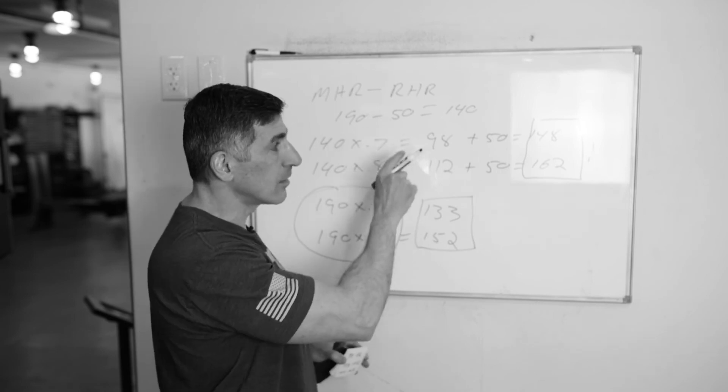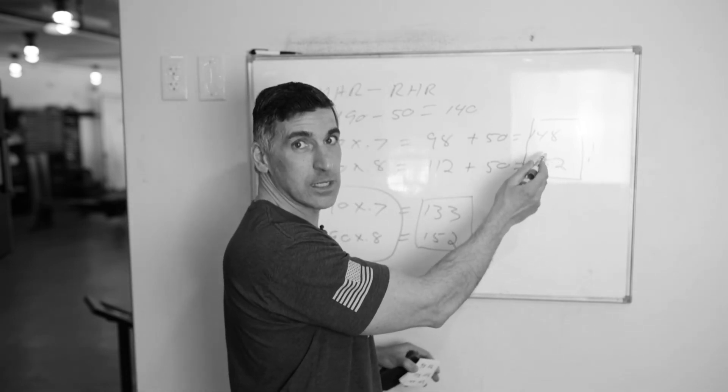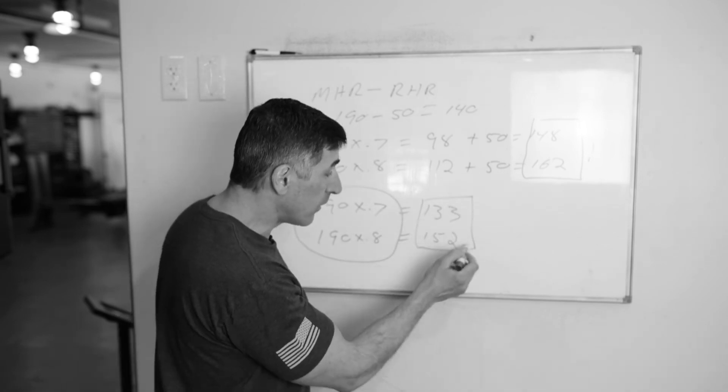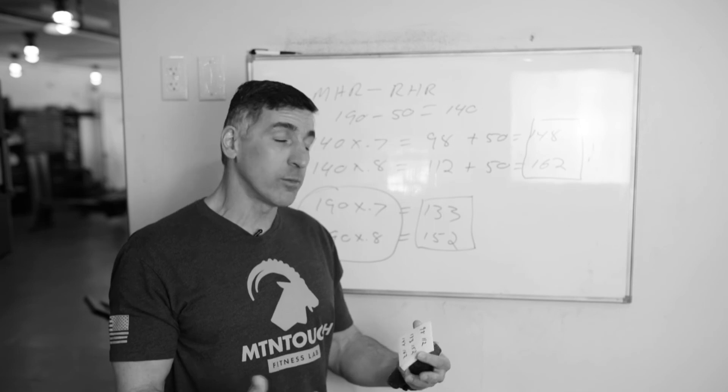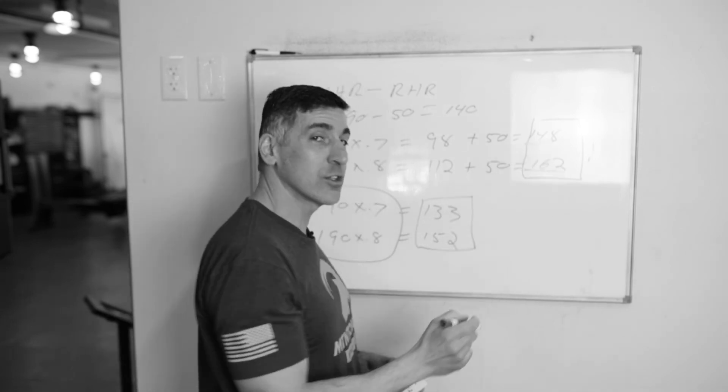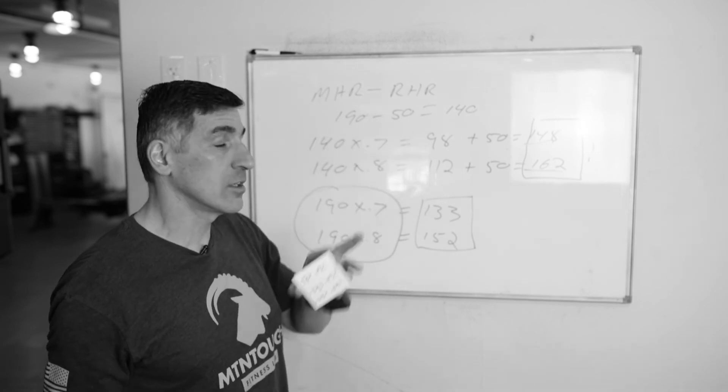When we use a resting heart rate, we get a more accurate picture of where 70 to 80% should be. So now you can see, instead of training at 133 or 152, which is what you traditionally would have done, now it's really 148 to 162, that's where you should be if you have a max heart rate of 190 and a resting heart rate of 50.